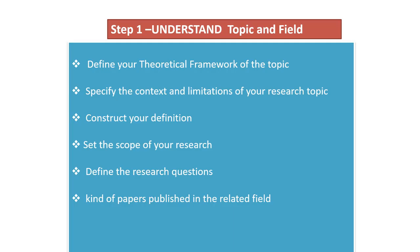The first step is to understand the topic and field — things are almost the same as with an empirical paper. First of all, define your theoretical framework of the topic. Then specify the context and limitations of your research topic. Construct your definition, set the scope of your research, define the research questions, and identify the kind of papers published in the related field. This kind of information is the stepping stone to doing citation network analysis.